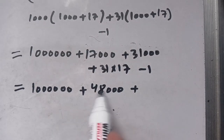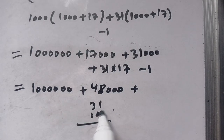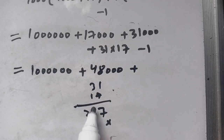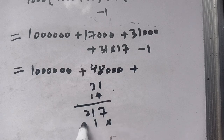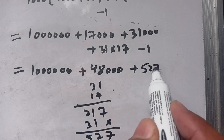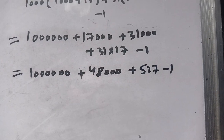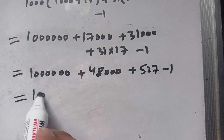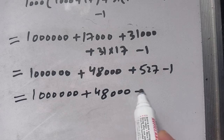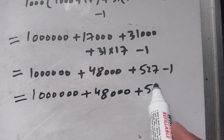Now 31 times 17: 7 times 1 is 7, 7 times 3 is 21; 1 times 1 is 1, 1 times 3 is 3; giving us 527. So we write 527, and minus 1 gives 526. Combining: 17,000 plus 31,000 equals 48,000, and we now have 1 million plus 48,000 plus 527 minus 1, which equals 1 million plus 48,000 plus 526.